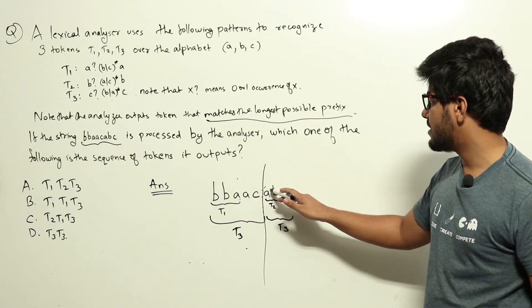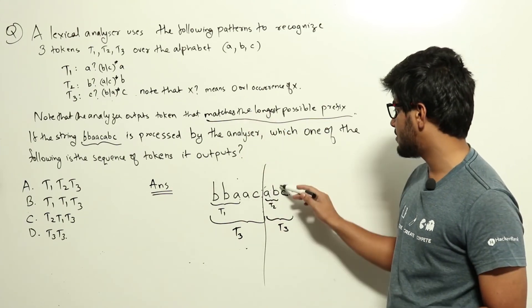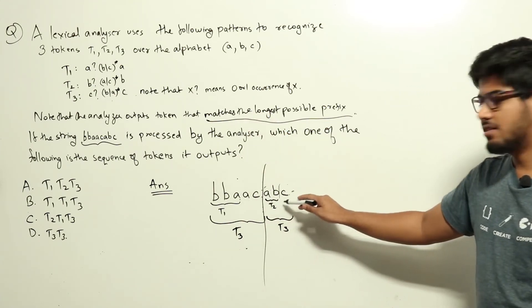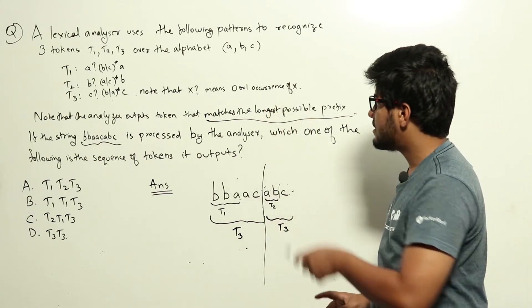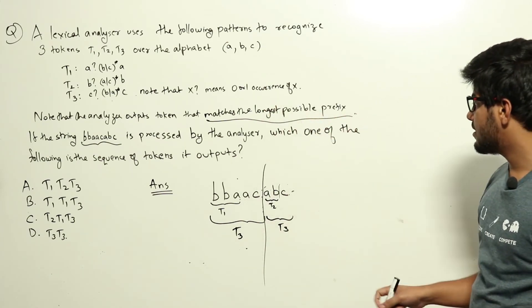Now let us try T3. Zero or one occurrence of c, there is no c here, so that is zero. Then b or a star a b, we can match up to here.